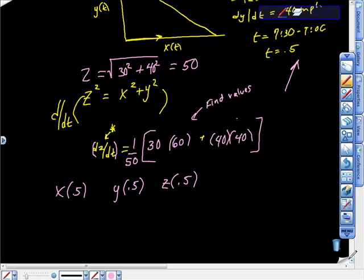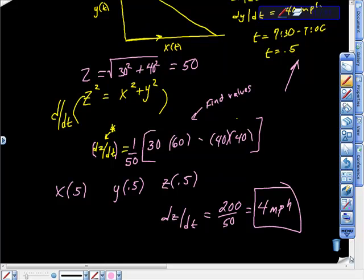If we just do all this math out at the bottom, it should get really easy. This is negative 40 here. So what we finally get is dz/dt is equal to 200 over 50 when we do all the simplification. 200 over 50 as we simplify is 4, and this is an AP exam, so 4 miles per hour. There's our solution, hope it's helpful.